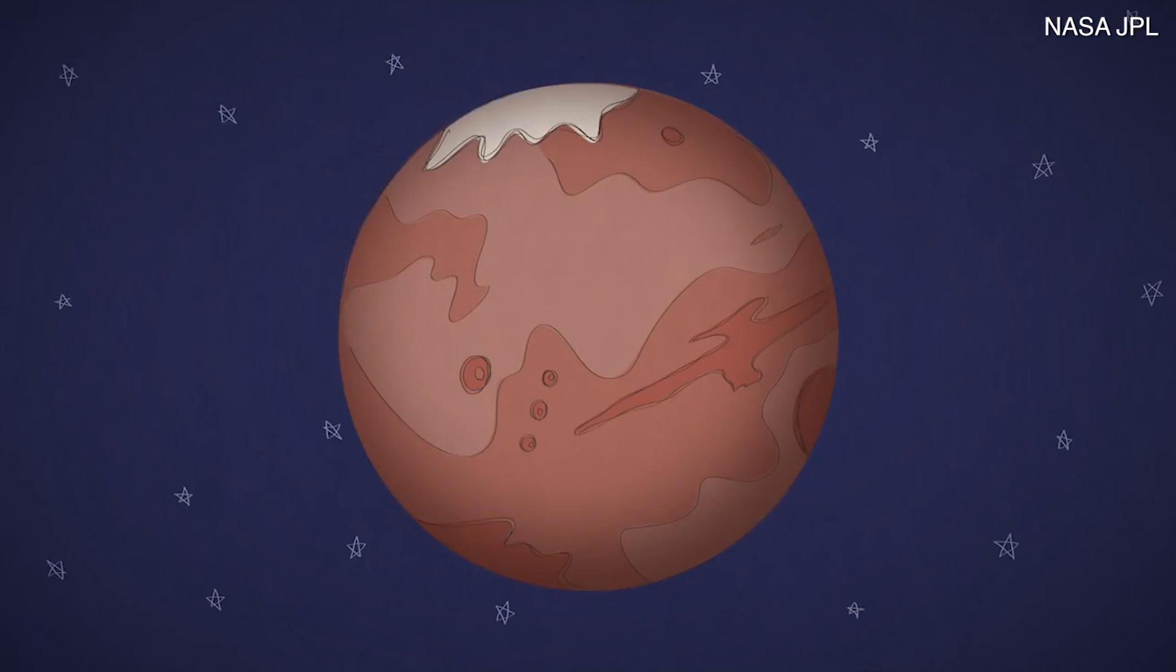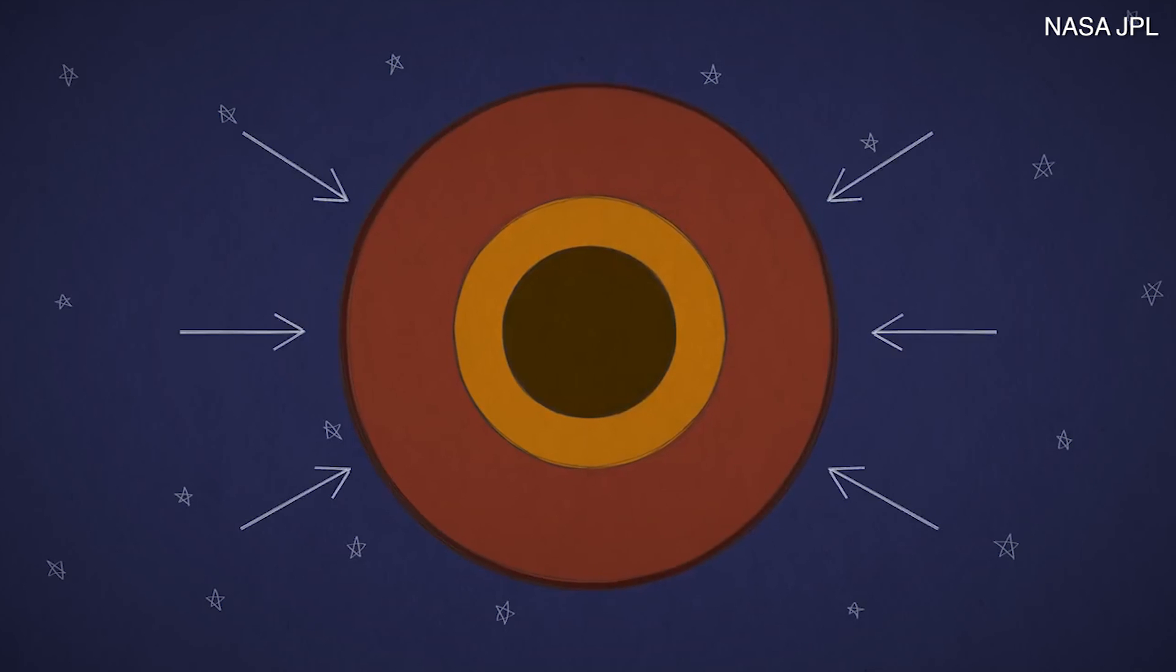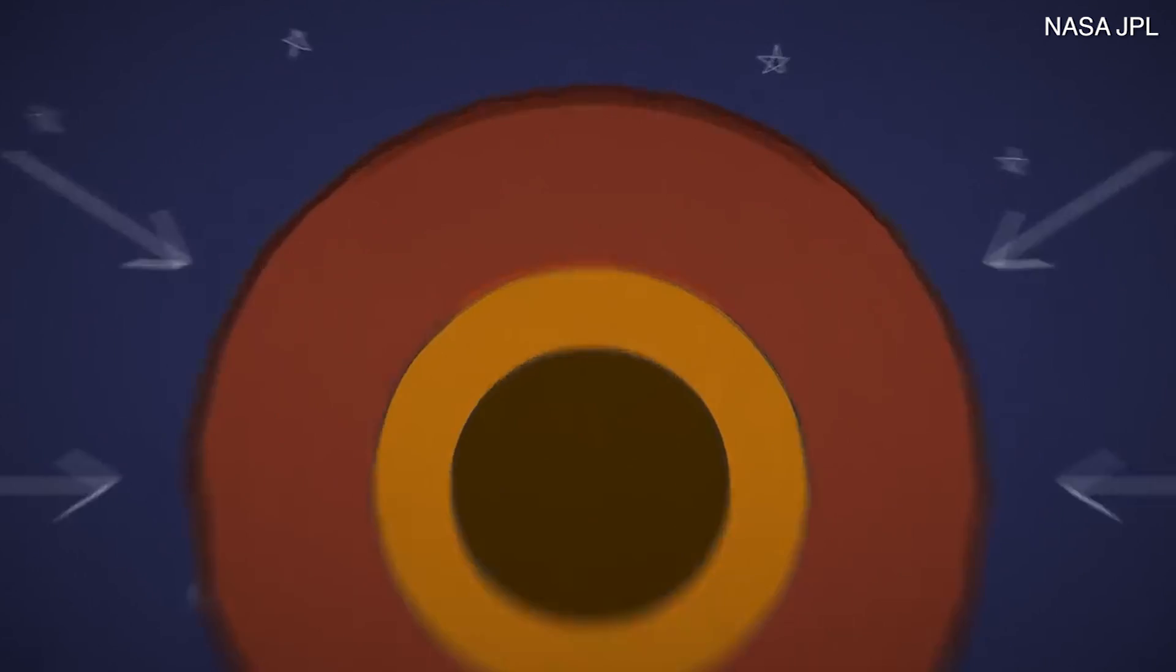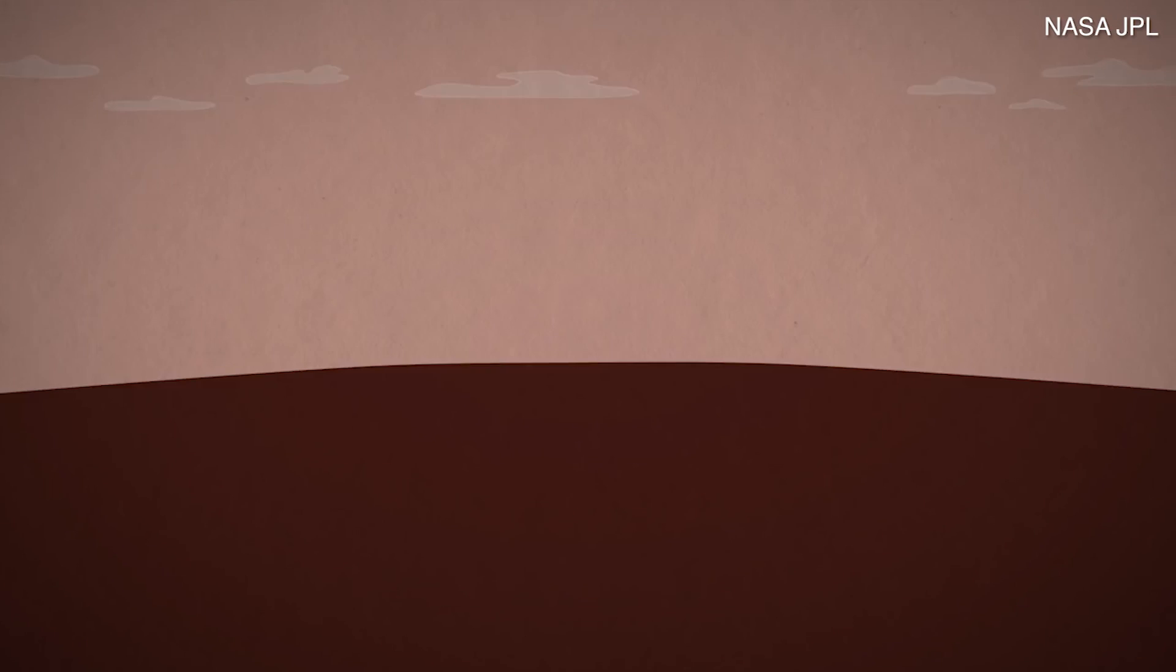Mars doesn't seem to have plate tectonics, but other things can make the ground shake too, like cracking caused by contraction from cooling, magma moving and creating pressure deep underground, or even meteorite impacts.